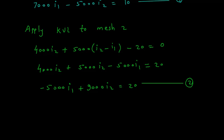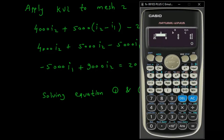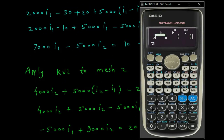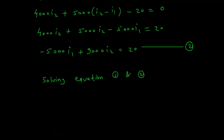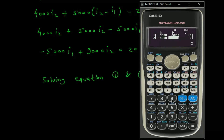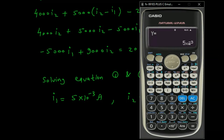Now solving equation 1 and equation 2, we get I1 equal to 5 × 10⁻³ ampere, and I2 equal to 5 × 10⁻³ ampere.